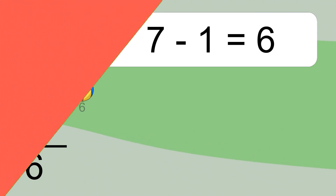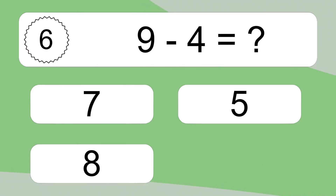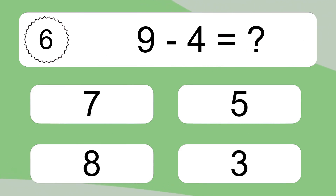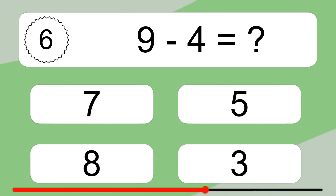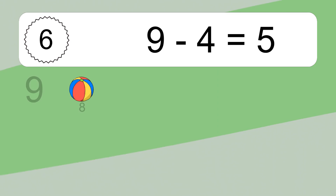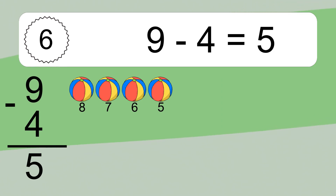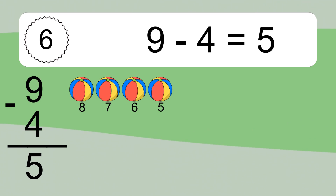9 minus 4 equals what? 9 minus 4 equals 5. Let's count it: 8, 7, 6, 5.